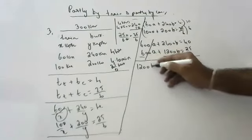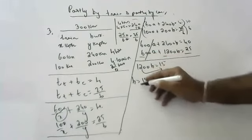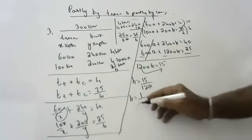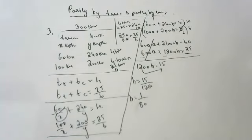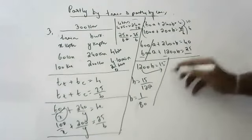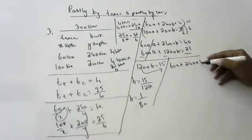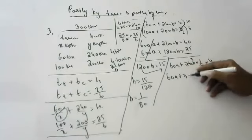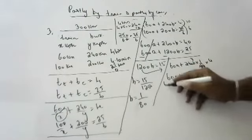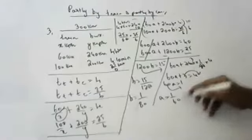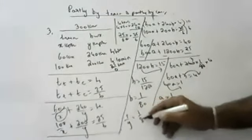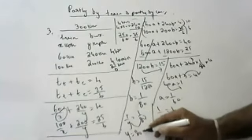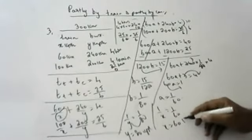Solving the system, we find B equals 1/80 and A equals 1/60. Therefore y equals 80 kmph is the speed of the bus and x equals 60 kmph is the speed of the train.